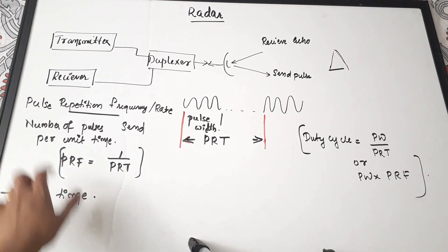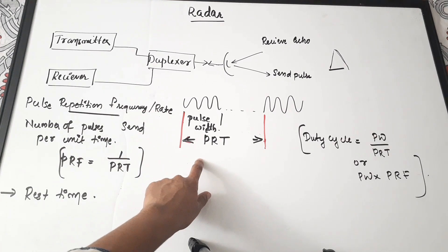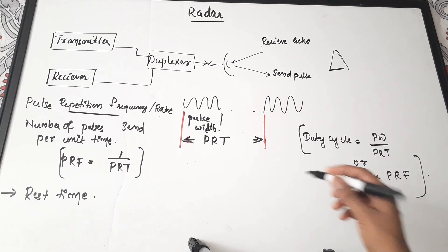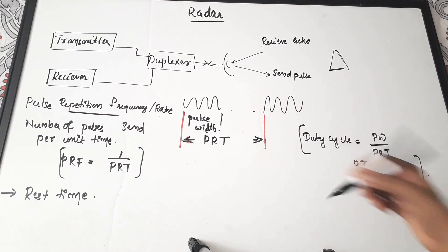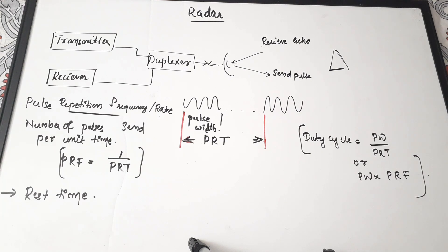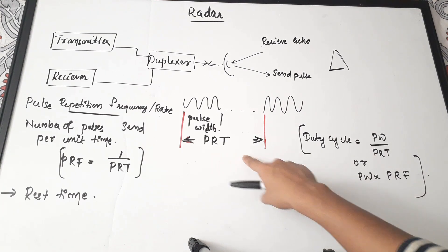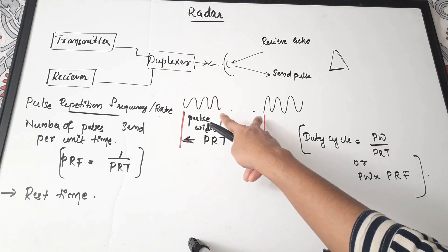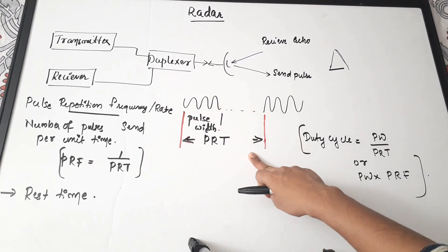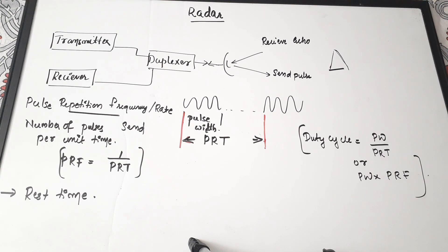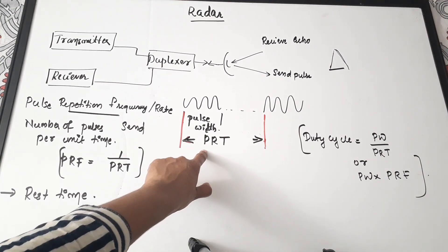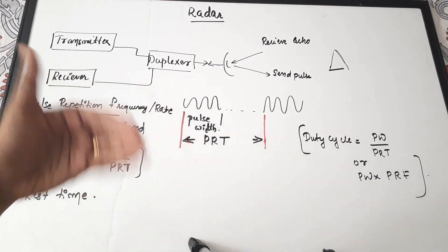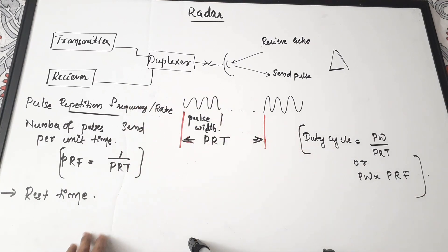Radar systems work based on the principle of wave reflection, more precisely sound wave reflection. Now we are going to see some basic terms: pulse repetition frequency, pulse repetition time, rest time, duty cycle, and others. Pulse repetition time is how frequently the pulses are being sent — the time difference between sending the first pulse and the second pulse.